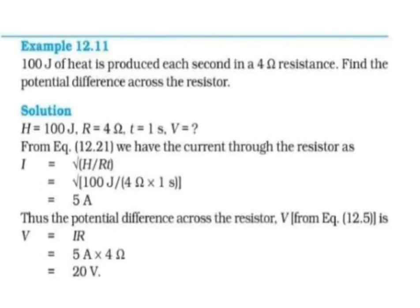The second question: 100 Joules of heat is produced each second in a 4 Ohm resistance. Find the potential difference across the resistor. We are given H = 100 J, T = 1 second, and R = 4 Ohm. Using the formula H = I²RT, we can calculate current I, which comes out to 5 Amperes. Then, we find the potential difference using V = IR, since we now know both I and R.